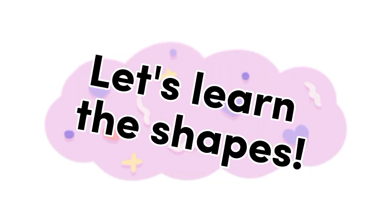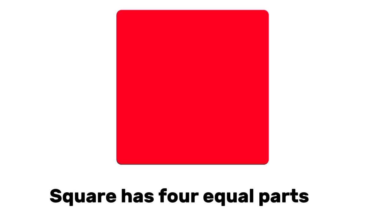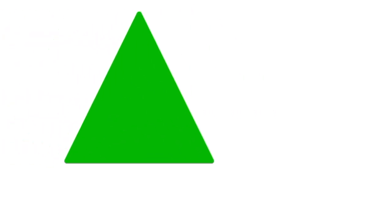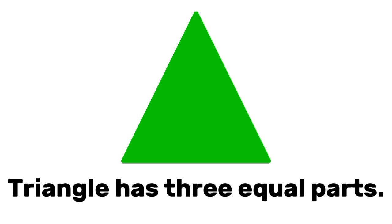Let's learn the shapes. Square. Square has four equal parts. Circle. Circle goes round and round. Triangle. Triangle has three equal parts.